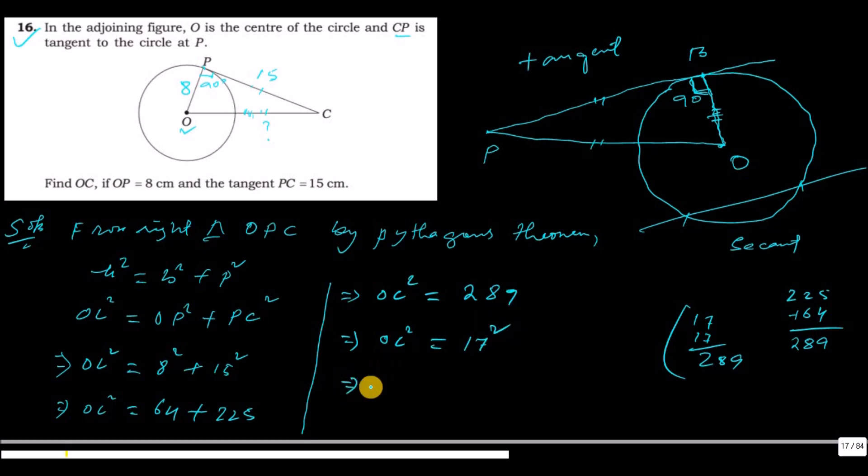It implies that OC, taking the square root on both sides, equals to 17. That is 17. So if you want to find OC, the OC value is 17.